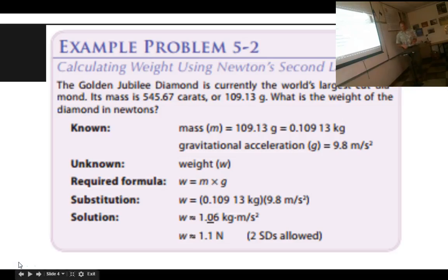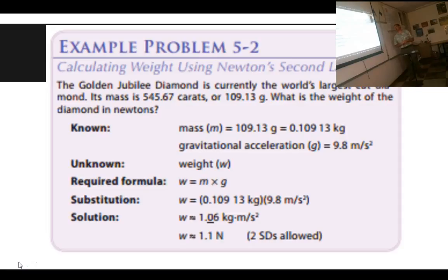Let's calculate weight — the force of gravity. The Golden Jubilee Diamond, currently the world's largest cut diamond, has a mass of 545.67 carats, or 109.13 grams. What is the weight of the diamond in newtons? We know the mass and the gravitational acceleration of 9.8 m/s². Weight equals mass times the acceleration of gravity: 0.10913 kilograms times 9.8 m/s² equals 1.06 kilogram·meters per second squared, which is the definition of a newton — so 1.06 newtons.